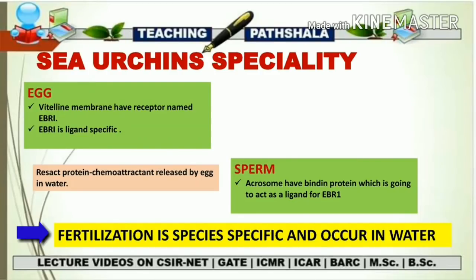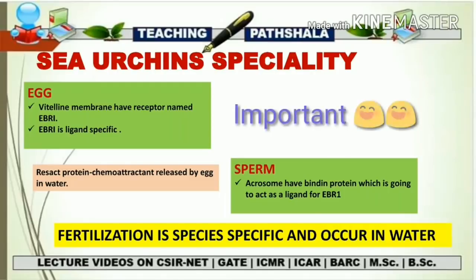An important point: fertilization in sea urchin always occurs in a species-specific manner inside water. This means the egg and sperm must be from the same species of sea urchin for fertilization to occur. If you take egg and sperm from different species (say S1 and S2), fertilization will not take place. All the points on this slide — EBR1 location, bindin location, resact as chemoattractant, and species specificity — are very important and likely to be tested in CSIR NET questions.